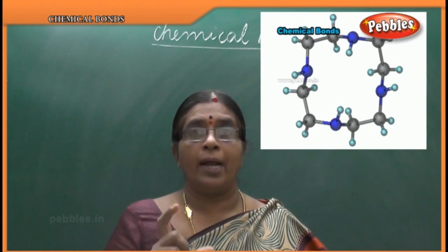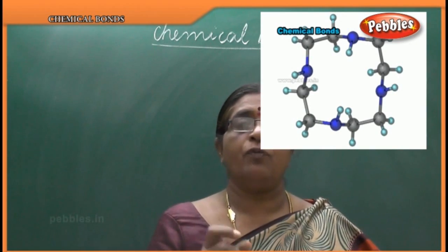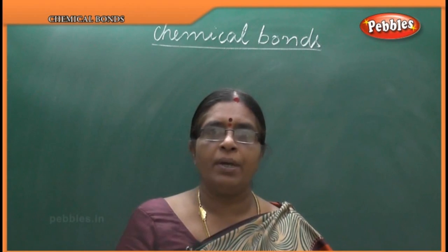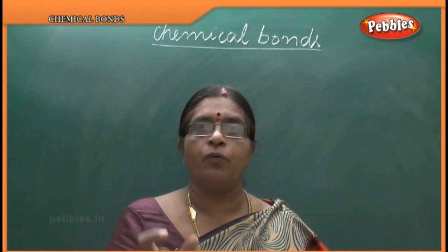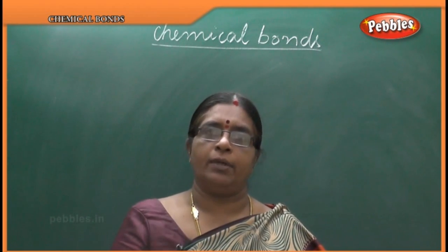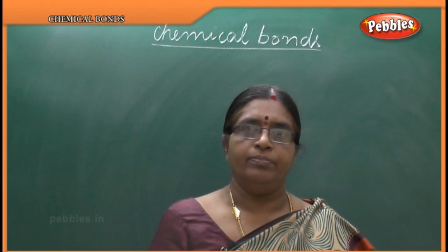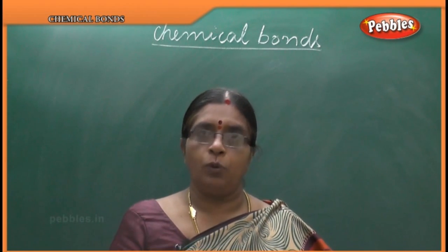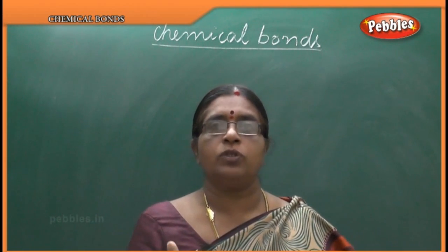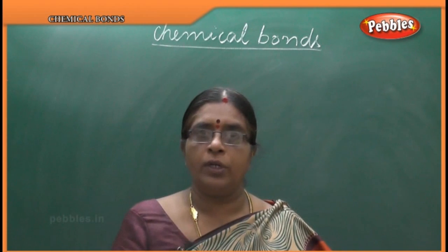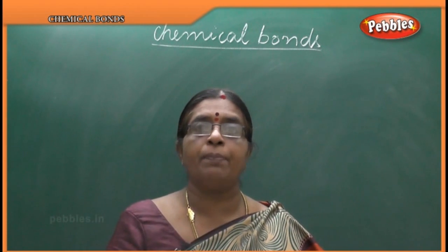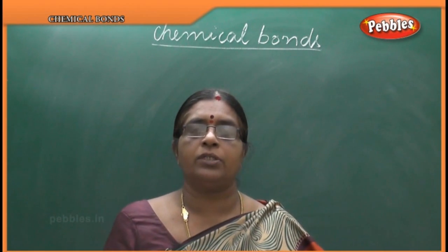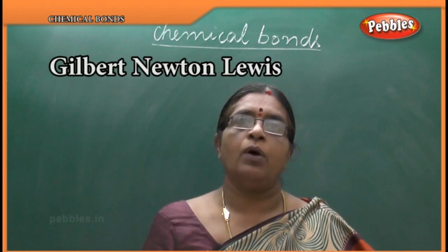Here, two atoms join together to form a stable molecule. So, in that formation, there is a bond formed between the two atoms. That is called a chemical bond. So, what is the chemical bond definition? Two or more atoms join together to form a molecule of stable configuration — that is called a chemical bond.